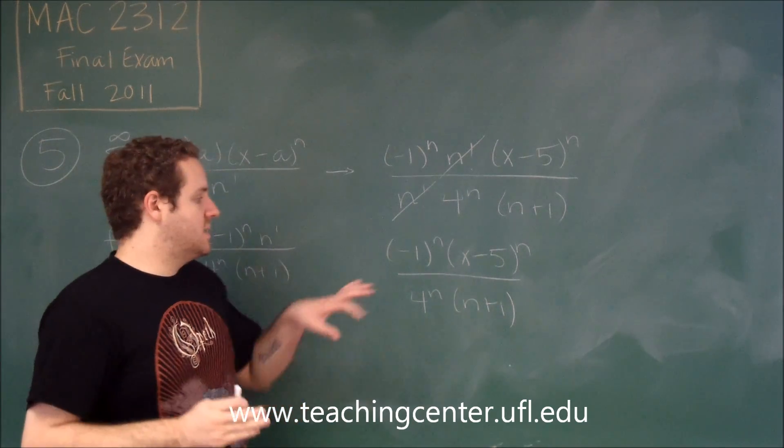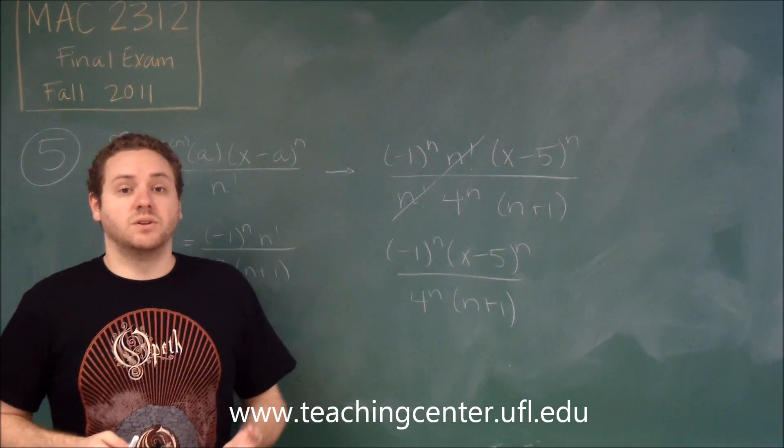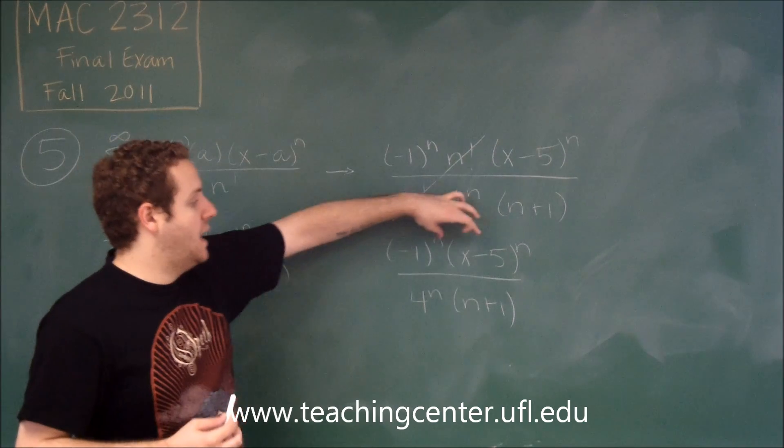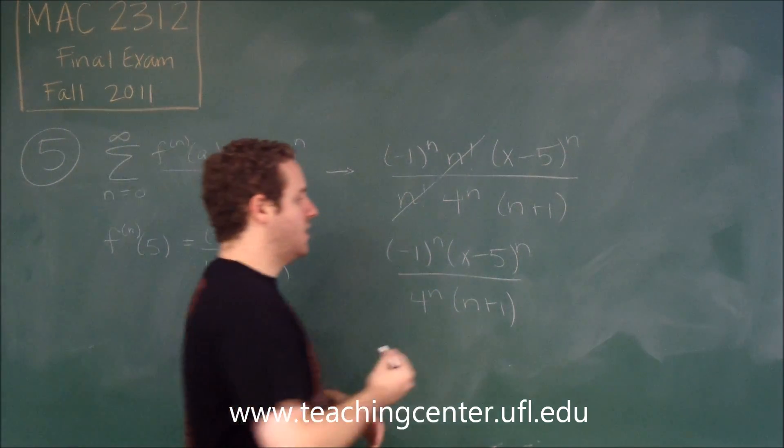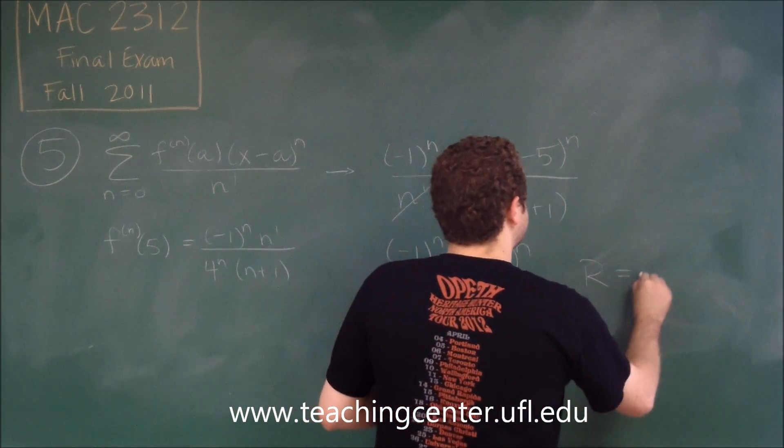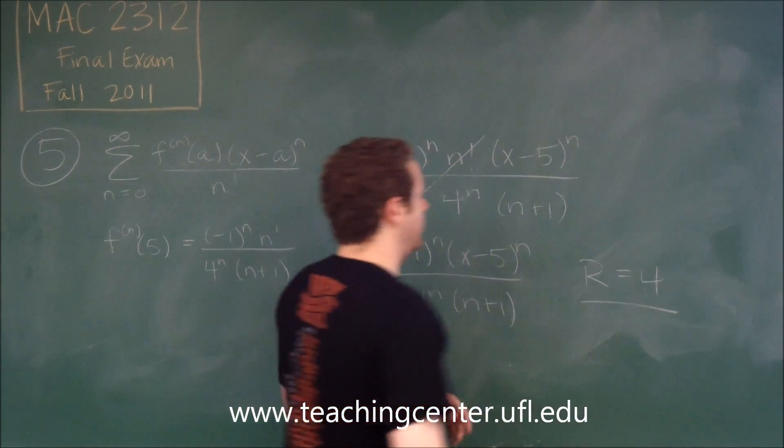But anything in between those, this is going to turn into a geometric and it's going to converge, no doubt. Because if the top exponential is smaller than the bottom, you always have a geometric series that converges. So we know that our radius is going to have to be 4.